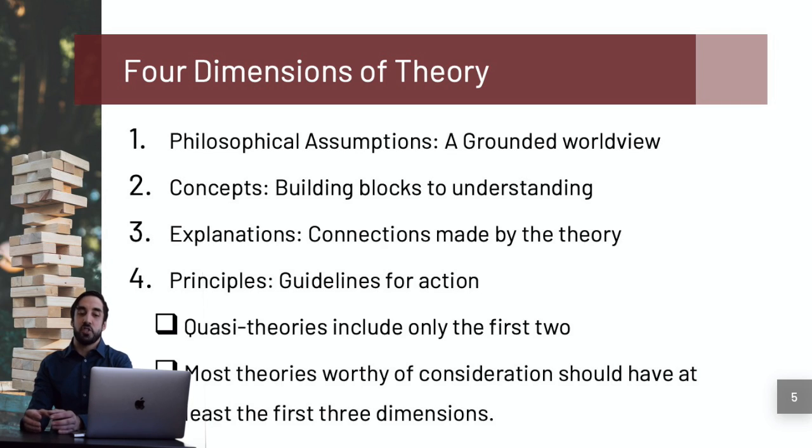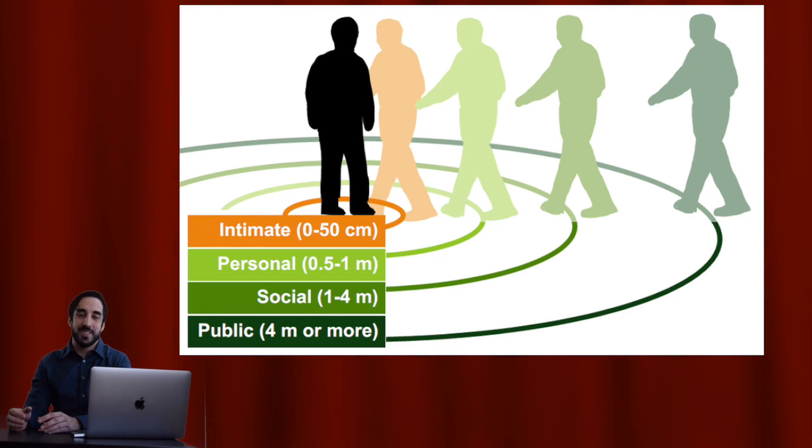Finally, this theory doesn't just have explanations, but it offers certain principles or guidelines for action. As a matter of fact, expectancy violation theorists have actually created a chart which models the distances that individuals should stay from one another in an intimate, interpersonal, social, and public communication zone. You can find that chart online, and if I'm able, I'll try to link that here in the video.